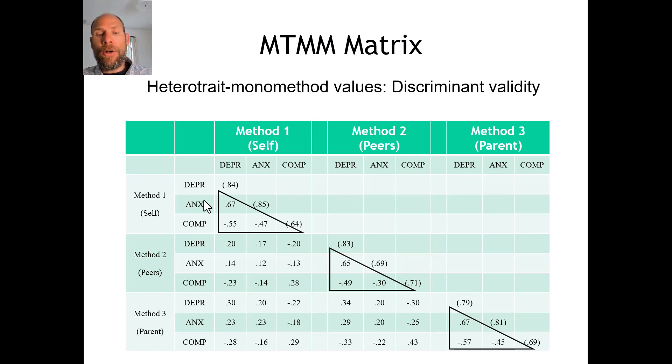Next are the so-called mono-trait hetero-method values, which appear in the sub-diagonals below those triangles. These are for the same trait measured with different methods or different raters. These values are of key interest in an MTMM analysis because they indicate convergent validity — whether different methods or measurement devices result in the same findings and can perhaps be used interchangeably, or whether there are strong method effects or rater discrepancies. Here you can see those convergent validity values are very low.